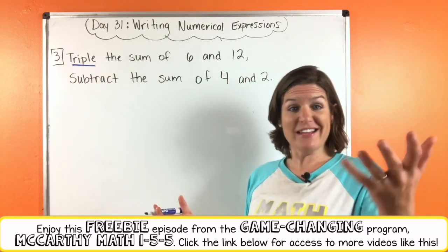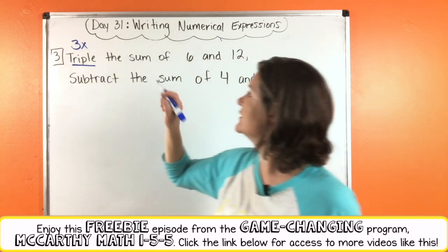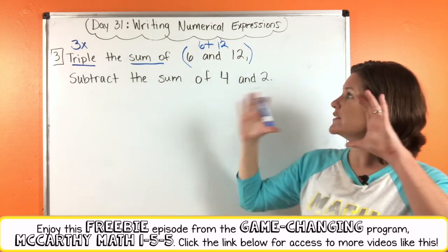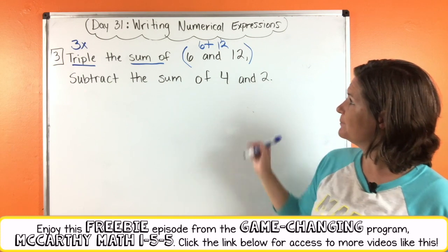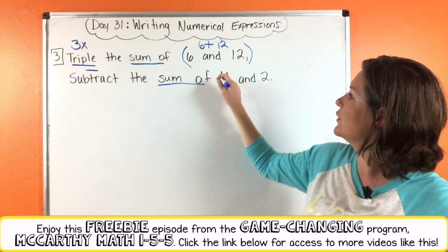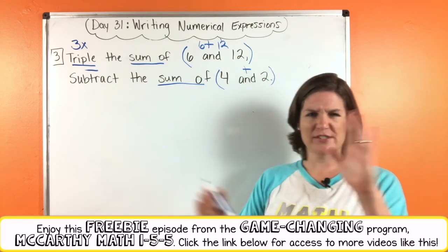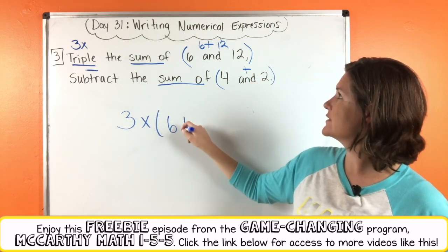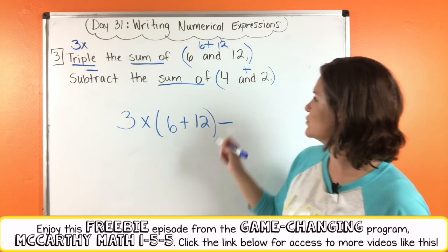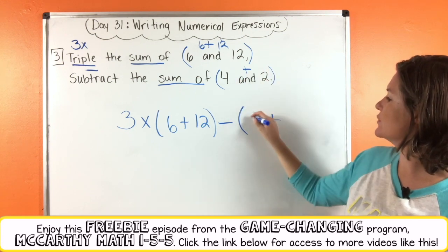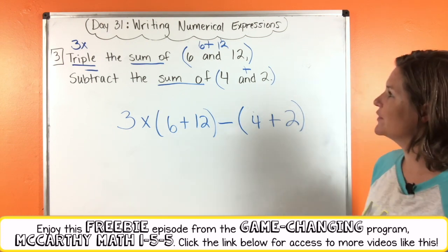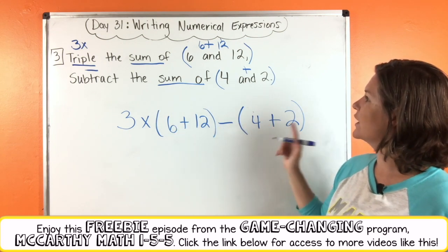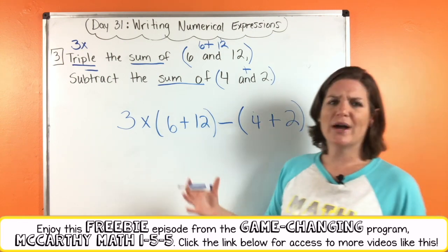Triple means 3 times. We need to take 3 times the sum of 6 and 12. Since sum means we're adding, we need parentheses around 6 and 12. Then we subtract the sum of 4 and 2 — so that also goes in parentheses. So we get 3 times (6 plus 12) minus (4 plus 2). Triple the sum of 6 and 12, subtract the sum of 4 and 2 — that totally makes sense. Break it down.